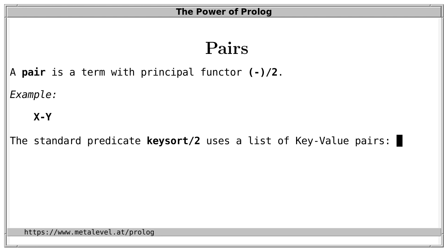Such pairs are used in several places in the Prolog ISO standard. Most notably, the first argument of the standard predicate keysort must be a list of pairs, called key-value pairs. And keysort, as the name suggests, sorts these pairs by their keys.